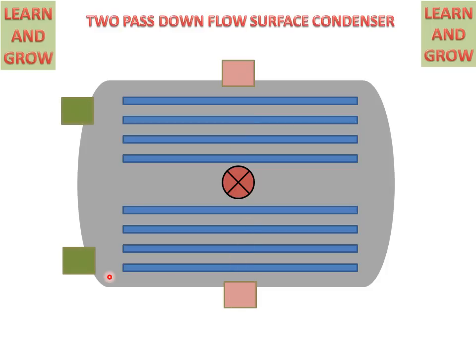These are the cooling water valves from which coolant will be in and coolant will be out. Now, we see the working of 2 pass downflow surface condenser.